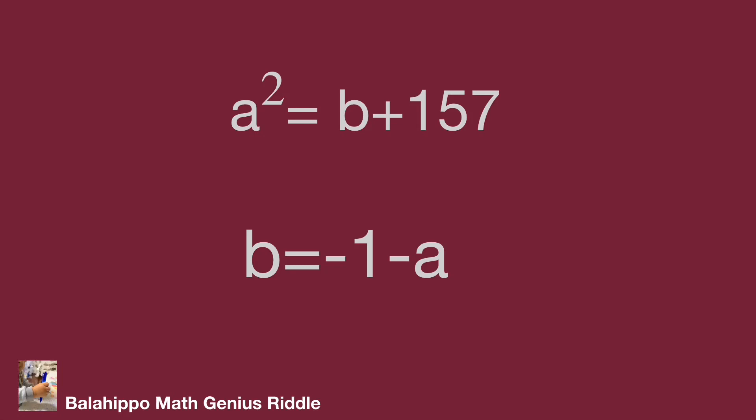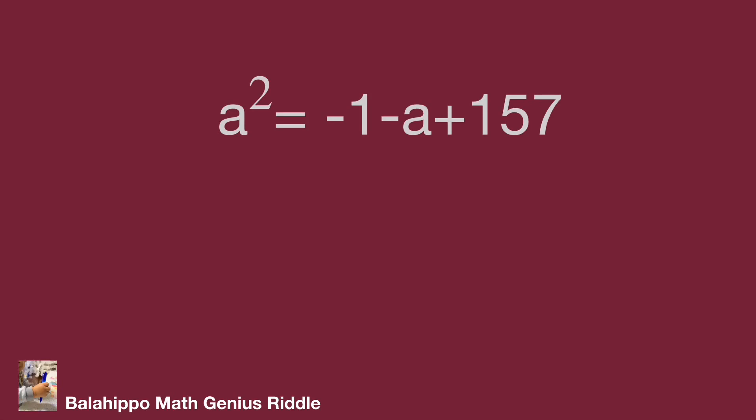Substitute b by minus 1 minus a into the equation as a squared equal to minus 1 minus a plus 157. Simplify it as a squared minus a plus 156 equal to 0.